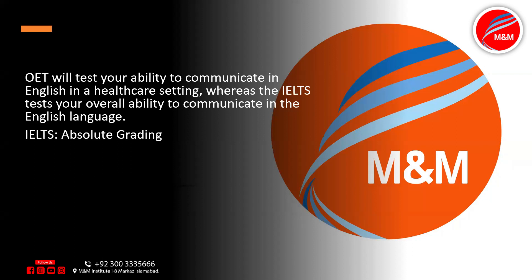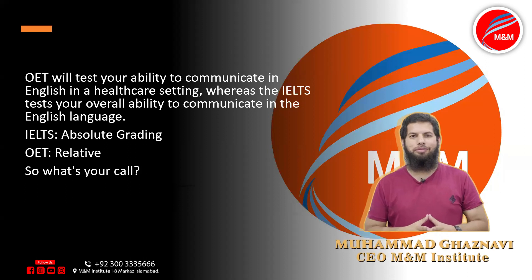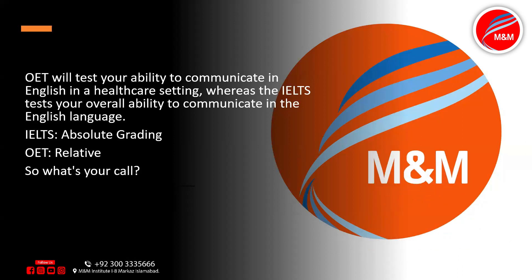In IELTS we have an absolute grading system — we know on which score we can get 6.5, 7, or 8 band. But in OET, although it's a common myth that 30 or 32 is a B grade, the defining criteria is relative, not absolute. This could be a positive point: if the exam was quite tough — for example, many candidates complained about reading being tough in the last session due to an artificial intelligence in medicine topic — a relative criteria could work in your favor.